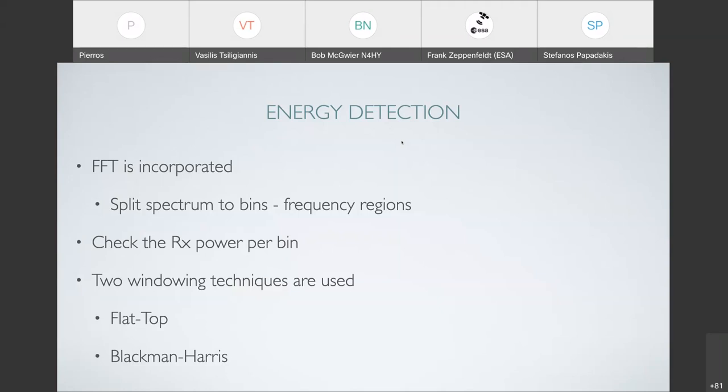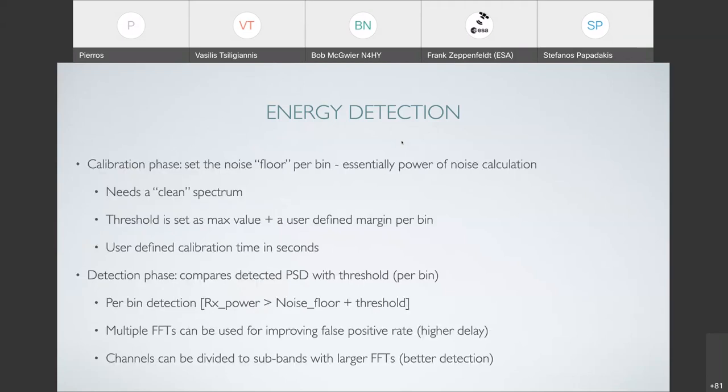Now, we are using two windowing techniques: Flat Top and Blackman Harris. Flat Top has the advantage to give a very precise measurement of the power that we receive, but it has an excessive spectrum leakage. Blackman Harris is the opposite, has better spectrum performance, but it is not so accurate in the power computation.